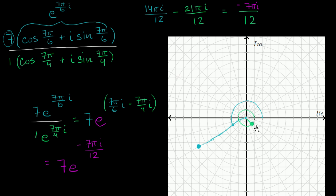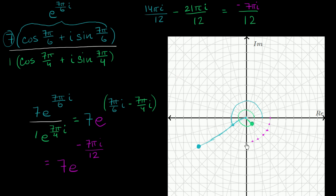Going clockwise: negative one, negative two, negative three, negative four, negative five, negative six, negative seven — that's our angle. I previously went all the way to negative 12 by mistake, but negative seven pi over 12 is the correct angle right here.